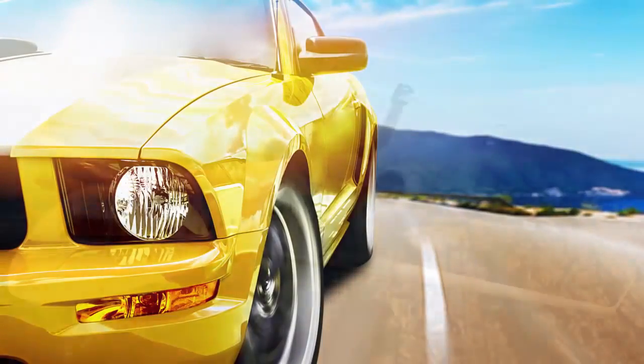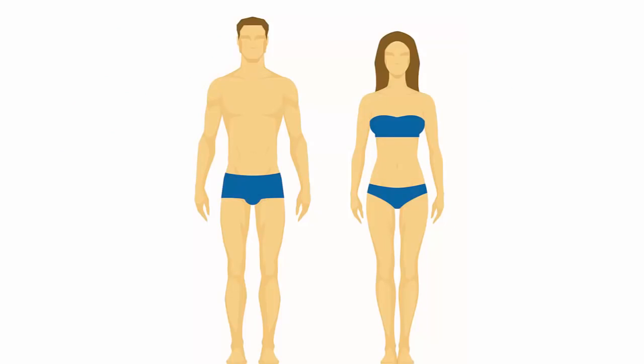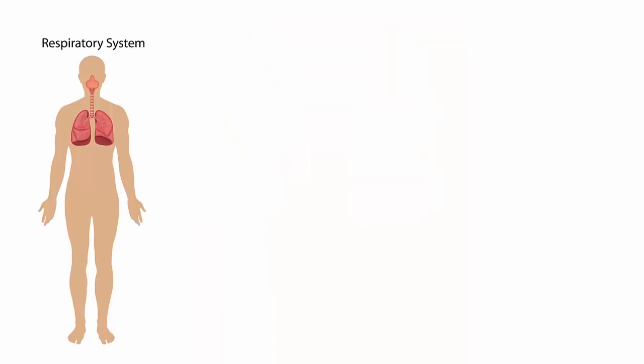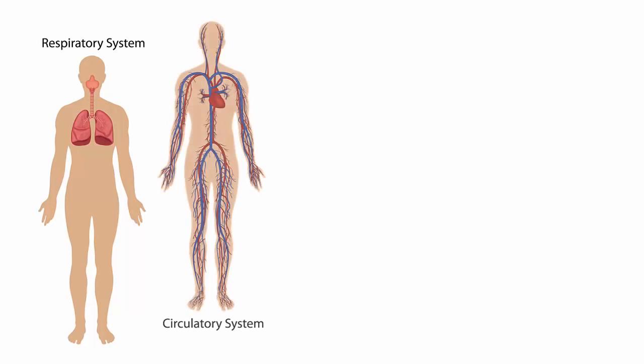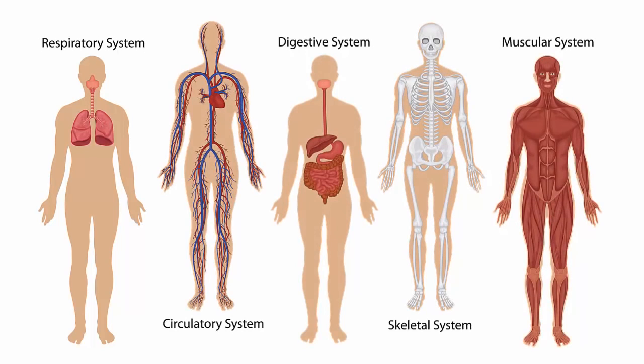The same is true for a car, plane, or boat. How does the human body work? A very complicated question, but when we learn about the human body, we focus on one system at a time, respiratory, circulatory, digestive, skeletal, and muscular, and then think about how they interact with each other.